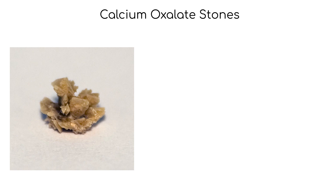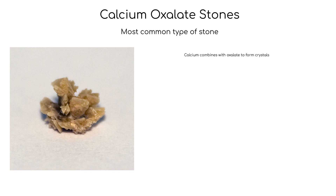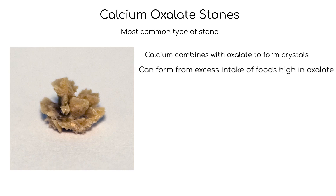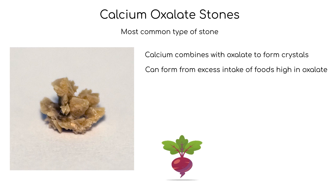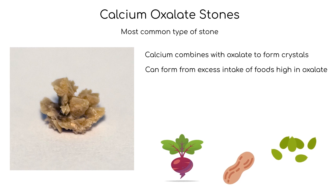Calcium oxalate stones are the most common type of kidney stone. Calcium can combine with oxalate in the urine and form crystals. Foods high in oxalate include beets, nuts, some seeds, and buckwheat. These stones can also form due to excess intake of salt, protein, or sugar.